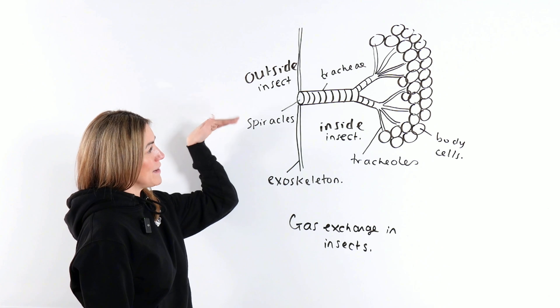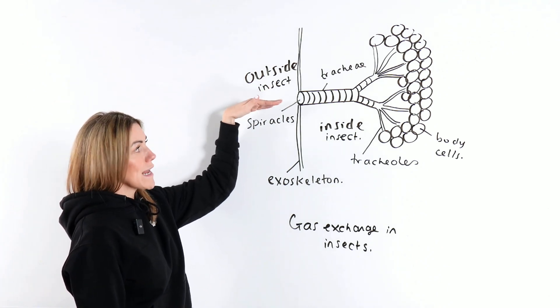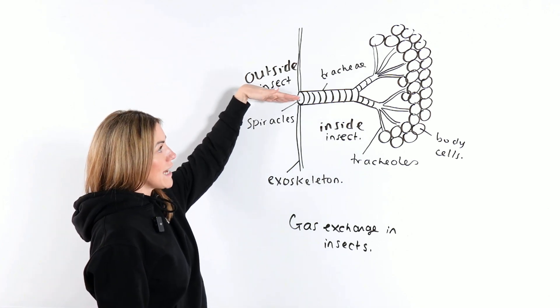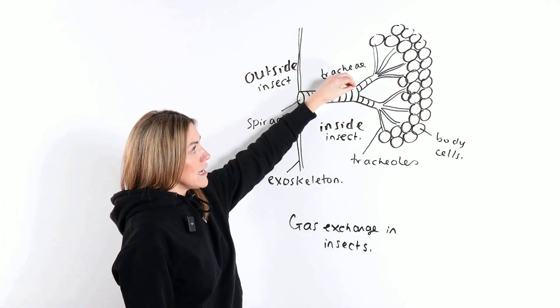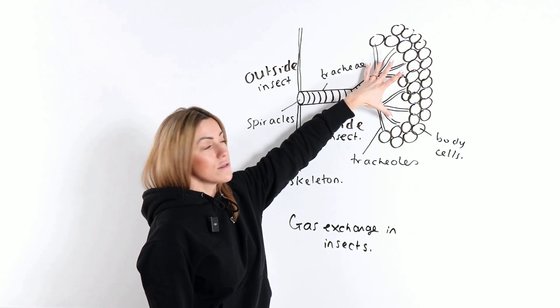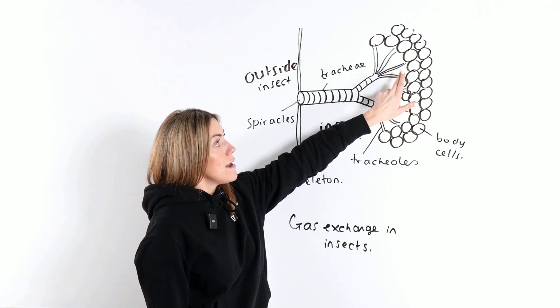What's going to happen is the air is going to move in through that opening, through that spiracle. It's going to go down the trachea into the tracheoles.